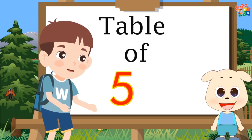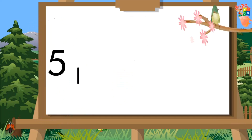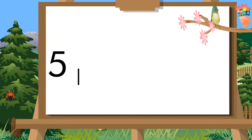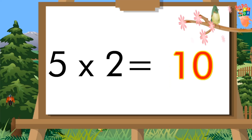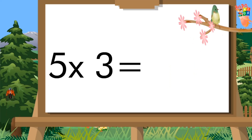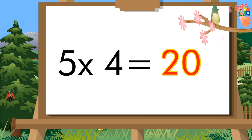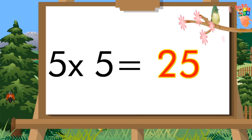Table of Five. Five, one's a five. Five, two's a ten. Five, three's a fifteen. Five, four's a twenty. Five, five's a twenty-five.